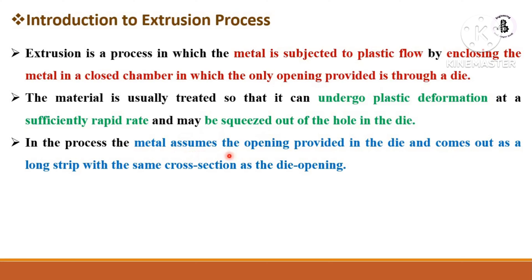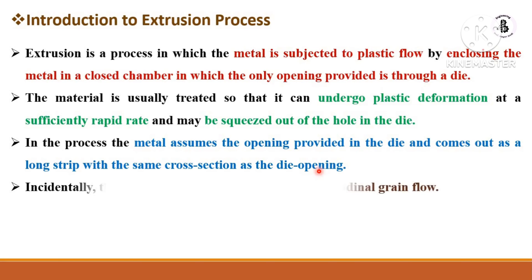The metal assumes the shape of the die opening and comes out as a long strip with the same cross-section as the die opening. There is no limitation with respect to the length of the job. You can make solid materials or hollow pipes. C-sections, T-sections, I-sections, and even railway tracks can be made with the extrusion process. The metal strip produced has longitudinal grain flow.